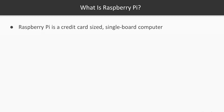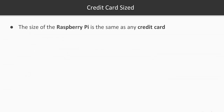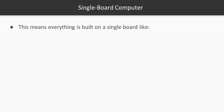Whenever you try to know about Raspberry Pi, you often come across the line that Raspberry Pi is a credit card sized, single board computer. Let me first explain this line. This line has two main words in it. The first one is 'credit card sized', meaning the size of Raspberry Pi is the same as any credit card.